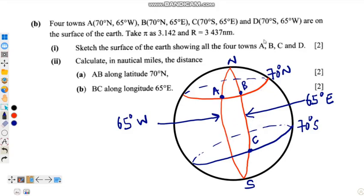Point D is on latitude 70 degrees south and longitude 65 degrees west. Points C and D share the same latitude, so point D is placed here. These are all the points, and this is the sketch required for question (i).